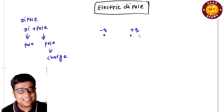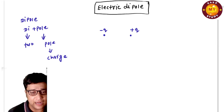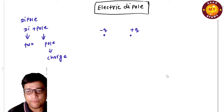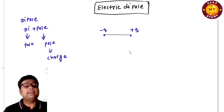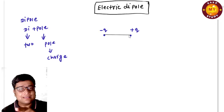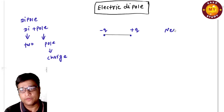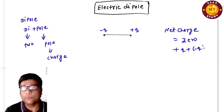I place here the negative charge and here the positive charge. The definition of electric dipole is: when two equal and opposite charges are placed at a very small distance, it constitutes an electric dipole. The key concept hidden here is that the net charge of this system is zero, because charge has additive properties.